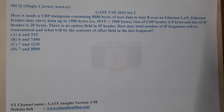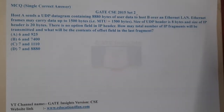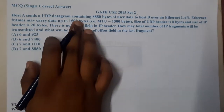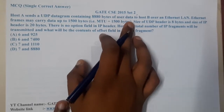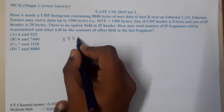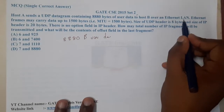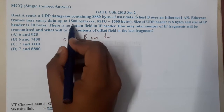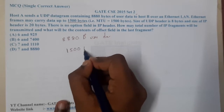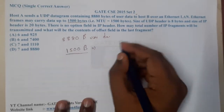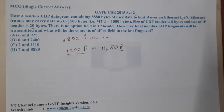Welcome back. This question is from GATE CSC 2015 Set 2. Host A sends a UDP datagram containing 8880 bytes of user data to Host B over an Ethernet LAN. An Ethernet frame can carry up to 1500 bytes, but after removing the 20-byte IP header, we can only transfer 1480 bytes of data per fragment. The UDP header size is 8 bytes.